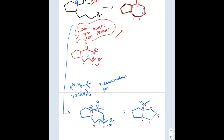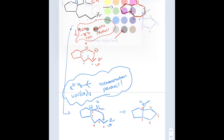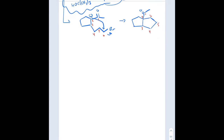One important note: minus 78°C is achieved by combining acetone with dry ice. Also, potassium tert-butoxide in tert-butanol is not a mistake — you wouldn't use potassium tert-butoxide in methanol because you'd risk forming methoxide instead. You should pair the alkoxide with its conjugate acid as the solvent.